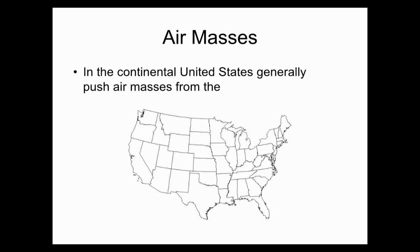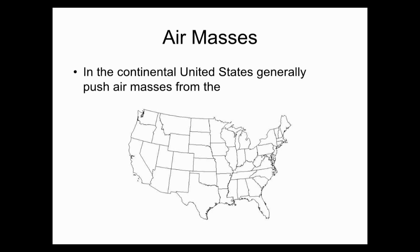In the United States, most of our air masses push from the west to the east, and that's why we see the majority of our weather moving this way. For us here in Virginia, if we look out into the Midwestern states, you'll notice that they move across the country. In the continental United States, our air masses usually move in the direction from west to east.